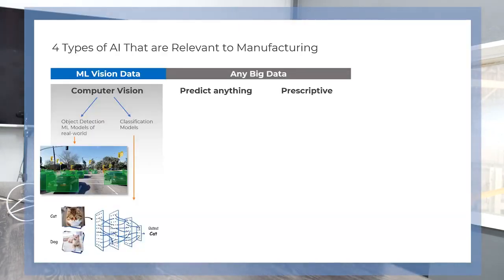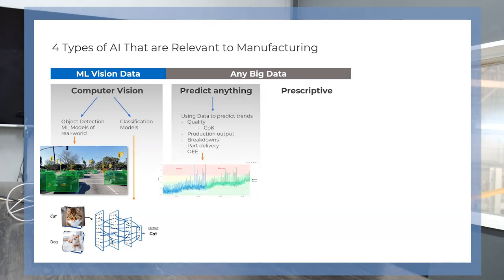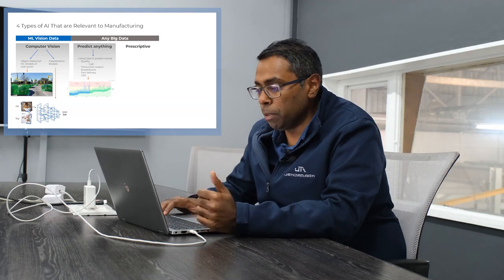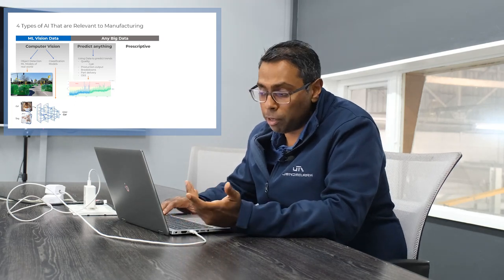The second two types of AI are really centered around data. This is what I call 'predict anything' and the other one is called prescriptive. Within predict anything, the idea is to use historical data and build a machine learning model that helps us predict and forecast the outcome — this could be used for production output, for quality, for OEE, for part delivery.